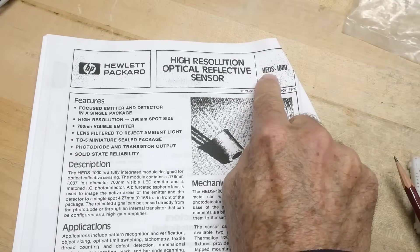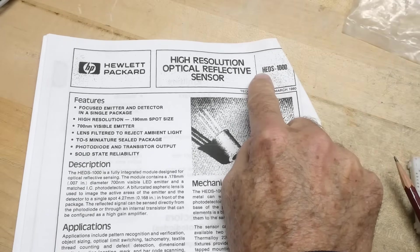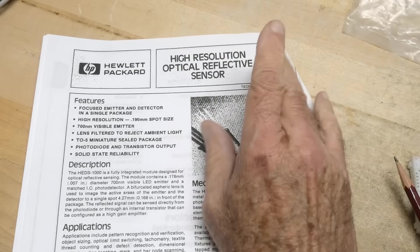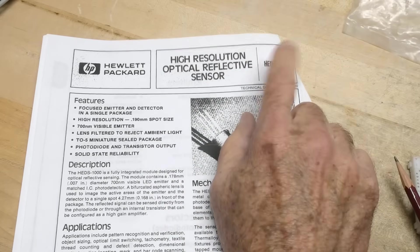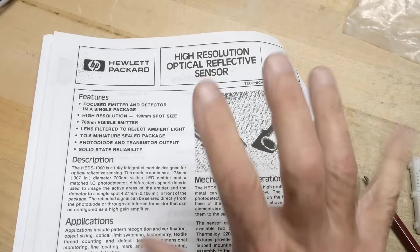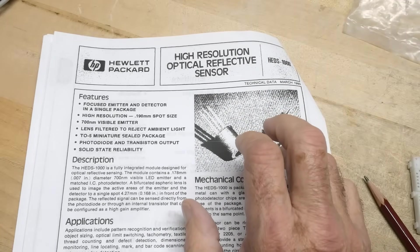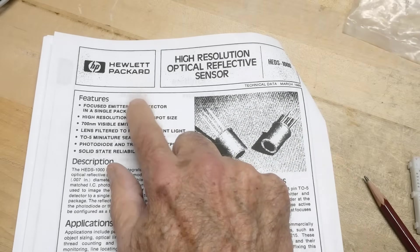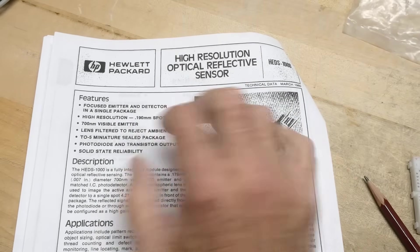It's an HEDS-1000, which stands for Hewlett Packard Emitter Detector Systems. It has both an emitter and a detector in optics. When I graduated from college, my first job out of college was to work for the Hewlett Packard Optoelectronics Division that made these things.